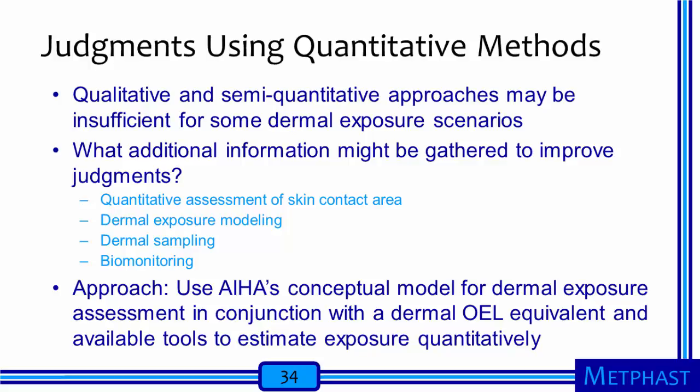When qualitative or semi-quantitative approaches do not provide enough detail to characterize an exposure scenario sufficiently, quantitative methods may be needed. We might perform a quantitative assessment of skin contact, model dermal exposures during specific work tasks, sample the skin and perform chemical analyses, or even perform biomonitoring of workers to assess internal doses from dermal exposures. To estimate dermal exposures quantitatively, we start with the AIHA Conceptual Model for Dermal Exposure Assessment, develop an occupational exposure limit equivalent for dermal exposures, and utilize available tools to assess and compare exposures to the OEL equivalent.